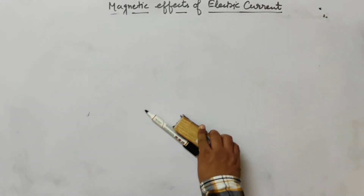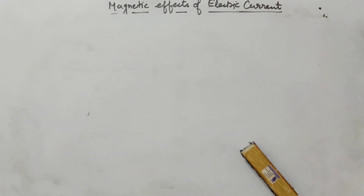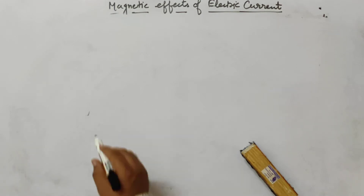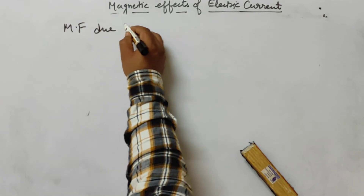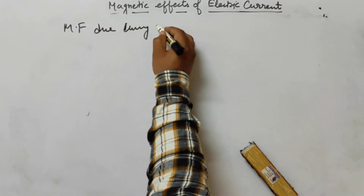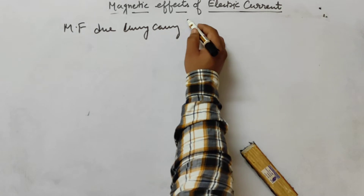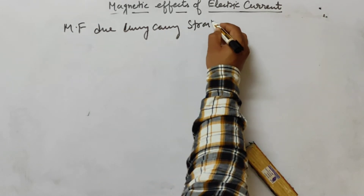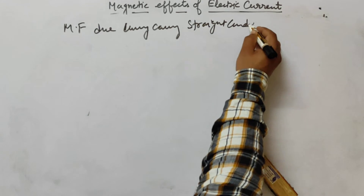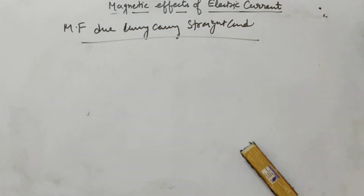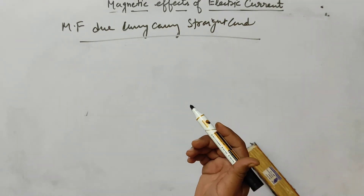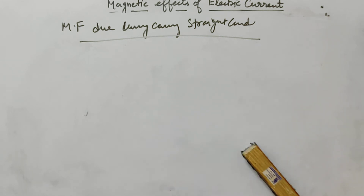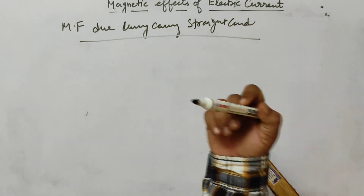Basically, Oersted found the relationship between electricity and magnetism — he found out that a magnetic field is produced due to a current-carrying straight conductor. When we pass current through a conductor, magnetic field is produced around it.